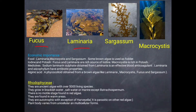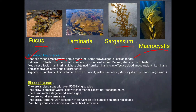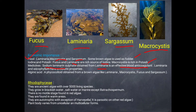Laminaria, Sargassum, and Macrocystis are important as food. Some brown algae are also used as fodder. Fucus and Laminaria are rich in iodine and potash. Macrocystis is rich in potash. Sodium laminarin sulphate is an effective blood anticoagulant and has antibiotic properties. Alginic acid is a phycocolloid obtained from brown algae like Laminaria, Macrocystis, Fucus, and Sargassum.